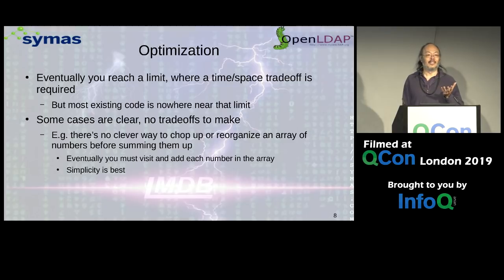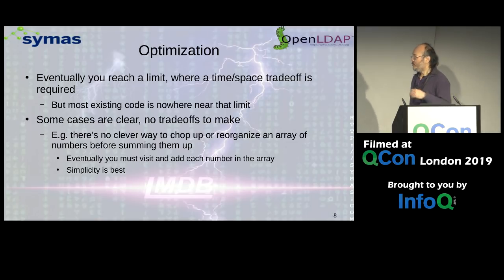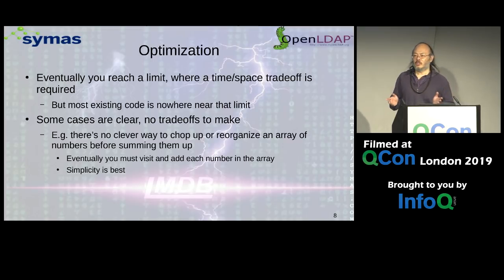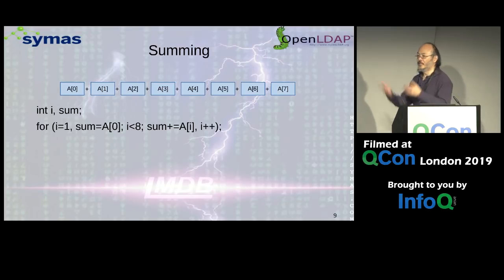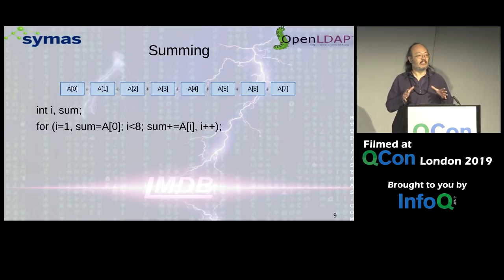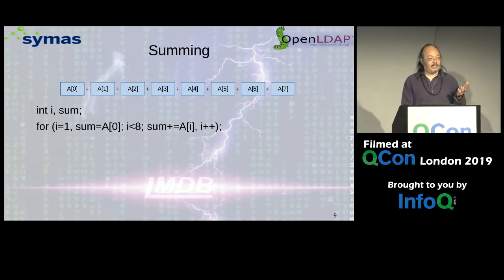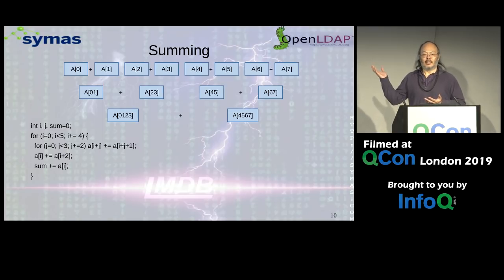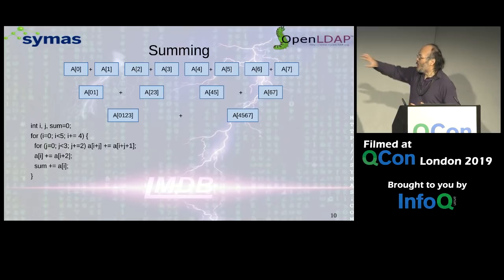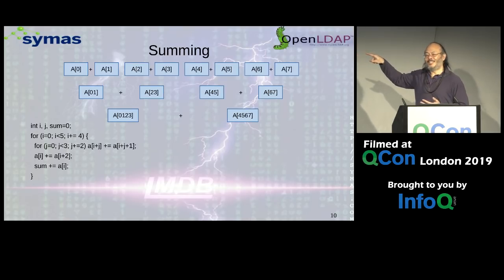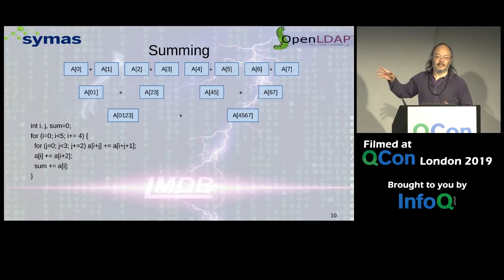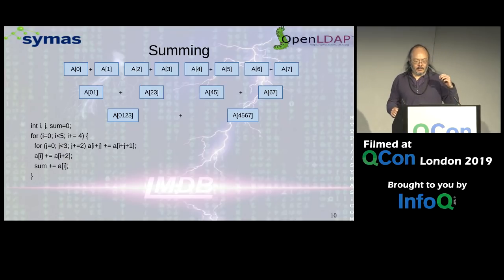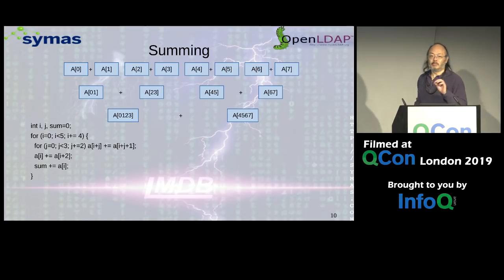Sometimes it's really clear that the solution in front of you is the best it's going to get and there's no need to do any more work on it. For example, if you just want to add up the values of all numbers in an array, the simplest and most straightforward solution is probably the best one. You've got an array of eight elements — just do a simple for loop through it, and you're done. You don't need fancy algorithms like divide and conquer.